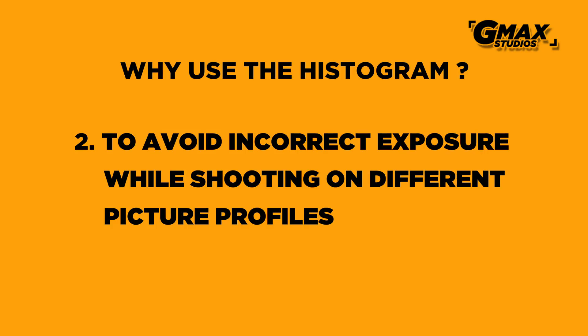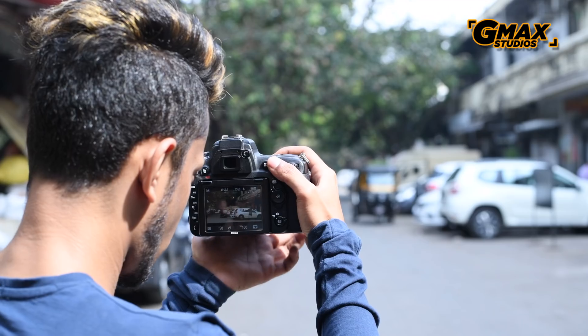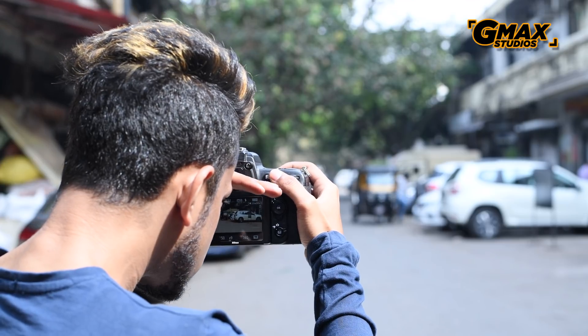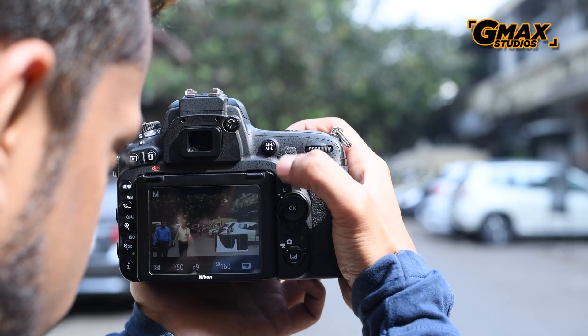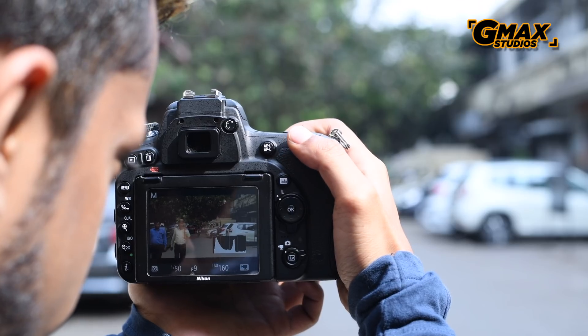Number two: the picture profiles that we are using to capture the photograph might also give us an inaccurate representation of the exposure and cause some misjudgment. Number three: if you are shooting in bright sunlight, it is practically impossible to see the monitor at the back of the camera.